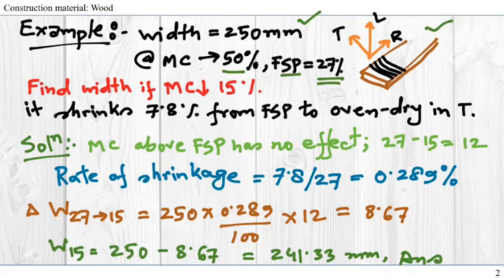So we don't have to use the 30% in general, but if this was not given then we would assume FSP as 30%. The question asks: find the width if the moisture content is dropped from 50 to 15%. It also gives us the shrink rate.